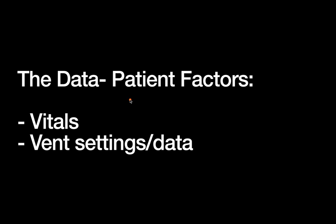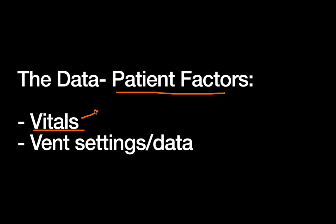When talking about data, there are two main classification sources: data related to the patient and data related to the machine. We'll cover patient data first. Starting with the patient's vitals — vitals are vitally important and should always be part of your daily review. But vitals are a little different when it comes to ECMO patients.